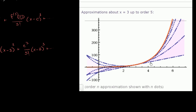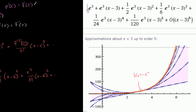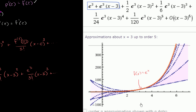What's even more interesting is that Wolfram Alpha actually graphs each of these polynomials with more and more terms. In orange we have f of x equals e to the x. They show the order n approximation with n dots. The order one approximation — the first degree polynomial using just the first two terms — is plotted with one dot, and that is this tangent line right at x equals 3. You can see it's just the tangent line there at x equals 3.